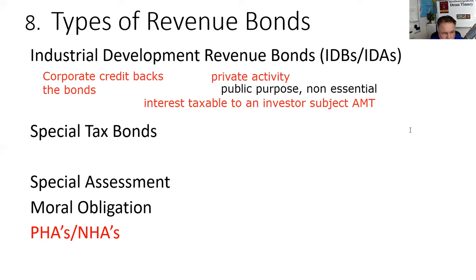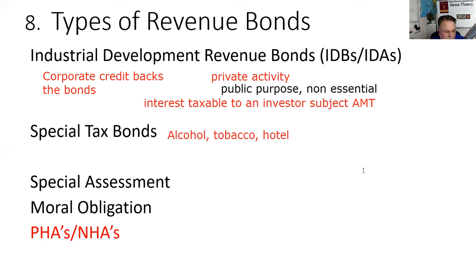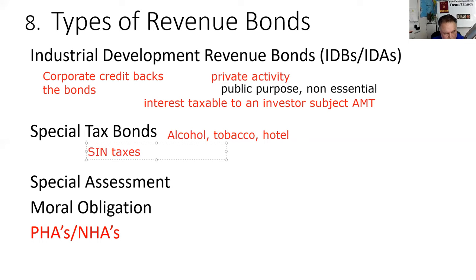Special tax bonds are backed by a special tax — not a general tax going into the general budget. This special tax might be on alcohol, tobacco, or hotels. Here in Las Vegas, we financed the Raiders stadium with a special tax on hotels, about $40 a night. The $40 pays the interest and principal on the bonds issued to build the facility.